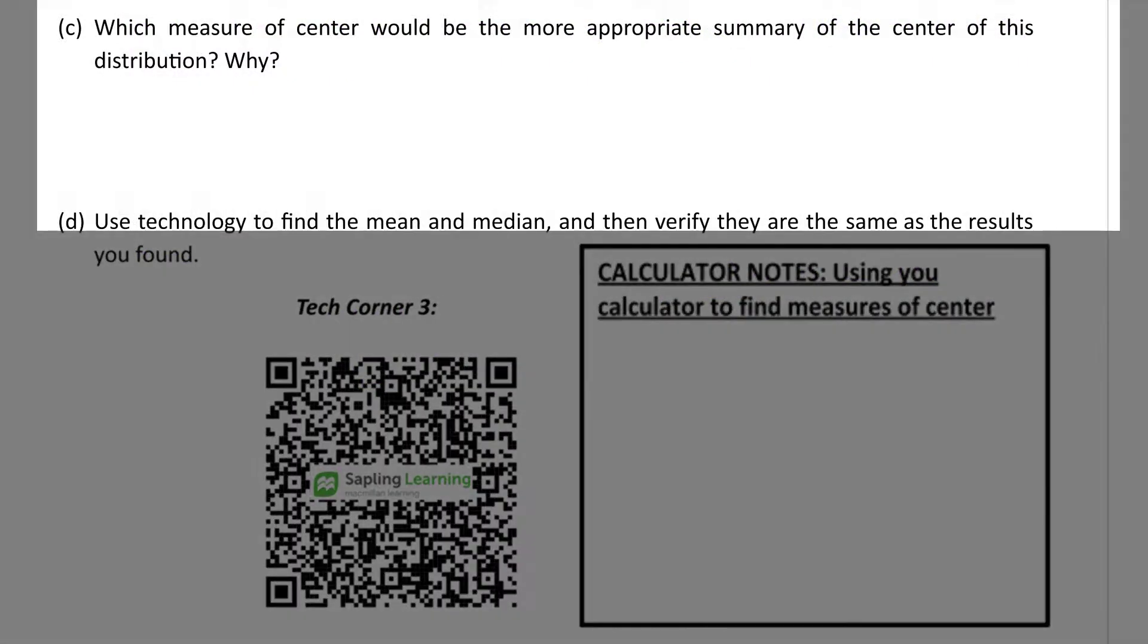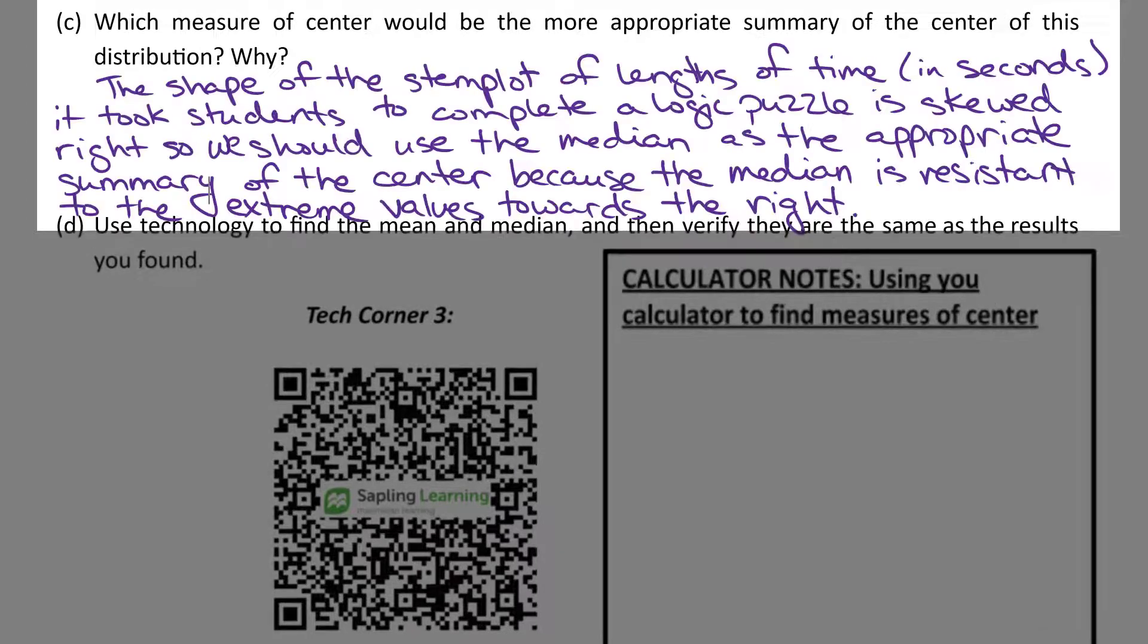Part C. Which measure of center would be the most appropriate summary of the center in this distribution? Why? This is keying in on the relationship between the appropriate measure of center and the shape of the distribution. So our answer we would say the shape of the stem plot of lengths of time in seconds it took students to complete a logic puzzle is skewed to the right. So we should use the median as the appropriate summary for the center, because the median is resistant to the extreme values towards the right.